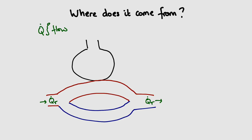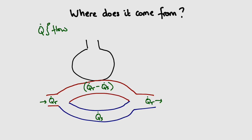The flow through the shunted portion is designated as Qs, S for shunt. The flow through the unshunted portion is simply the total flow minus the flow through the shunted portion, so that becomes Qt minus Qs. This nomenclature can look quite unappealing when you open a textbook, but using a schematic we can see it has a physiological underpinning.